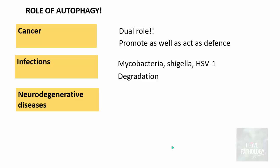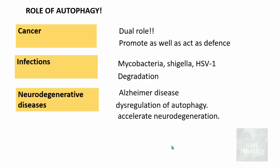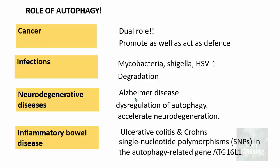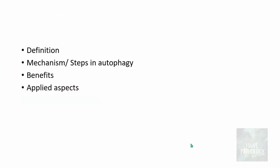In certain neurodegenerative conditions, particularly Alzheimer's disease, there is dysregulation of autophagy leading to acceleration of neurodegeneration — one of the mechanisms of Alzheimer's disease. Lastly, in inflammatory bowel diseases like ulcerative colitis and Crohn's disease, there are single nucleotide polymorphisms in autophagy-related genes, particularly ATG16L1. This defect in autophagy-related genes is one of the many mechanisms for development of inflammatory bowel disease.